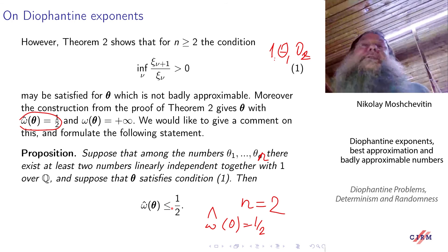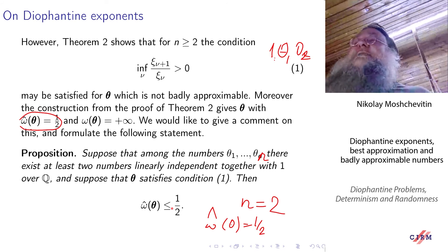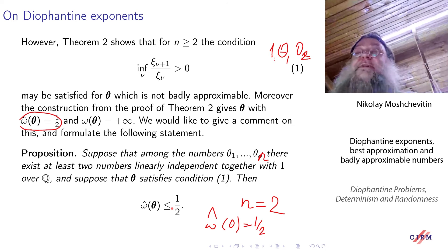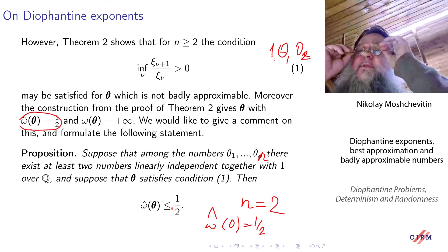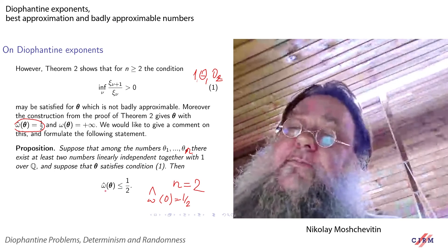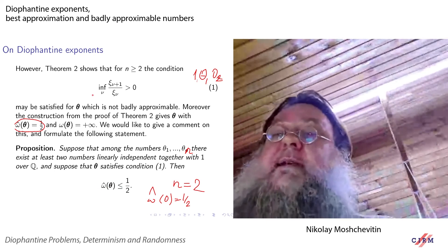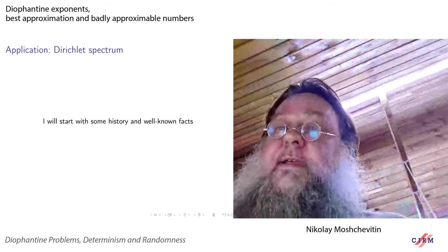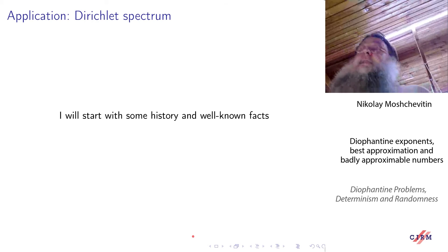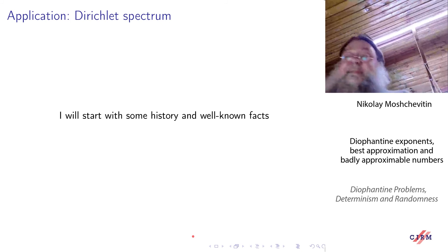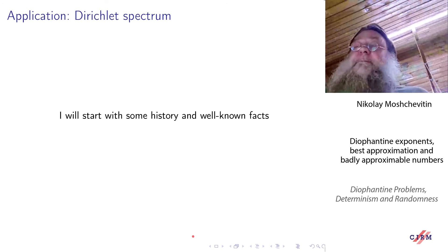This means that in dimension n=2, omega-hat should be equal to one half because the lower bound coincides with the upper bound. However in higher dimension the lower bound is different, and there are obvious questions — which I do not know the answer to — about what the bounds for omega-hat are under such a strange condition. Another story related to these results on badly approximable vectors deals with the Dirichlet spectrum.